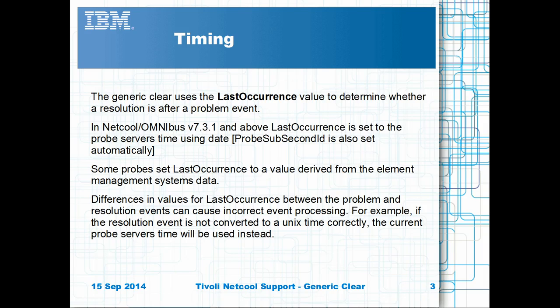Newer versions of Netcool Omnibus include a sub-second counter field called probe sub-second ID. This is set to an increasing integer value at the same time the probe sets the last occurrence events, and is used to determine the sub-second order of problems and resolutions.